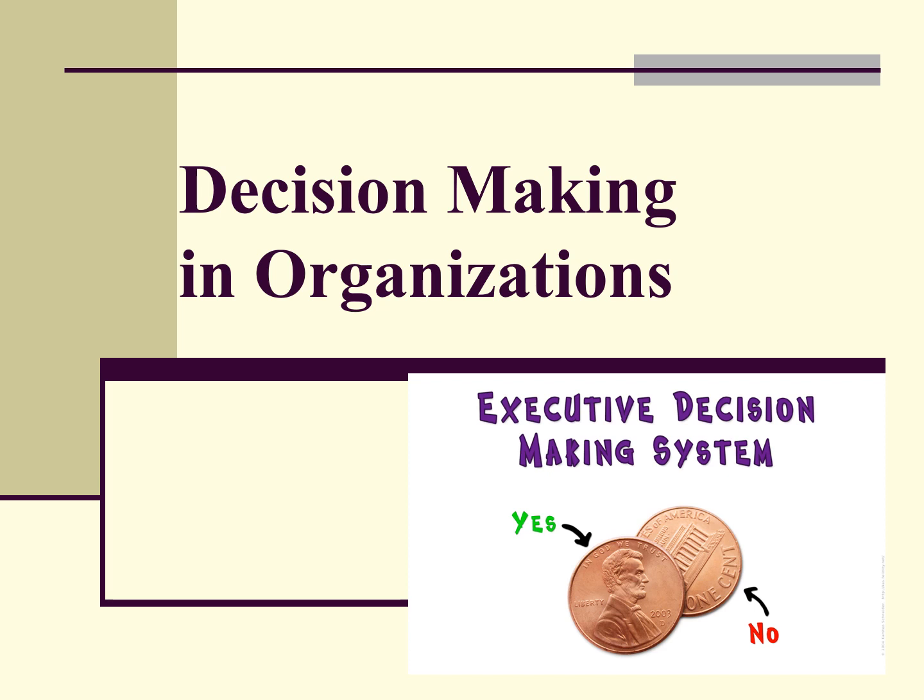Subjective still covers a lot of decision-making. There are times when there's no way to get enough data that two, three, or four different people looking at the same information would make the exact same decision — that means the decision is made subjectively. It's still drawing on evidence, data, and previous experience, but people may not agree. A lot of decisions are subjective and personal.